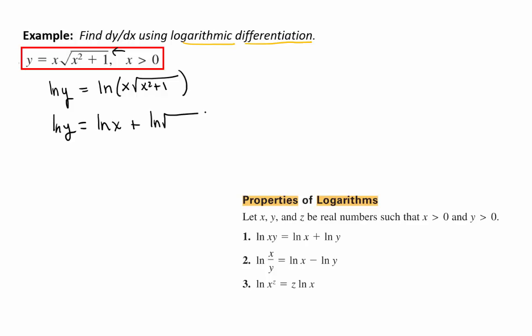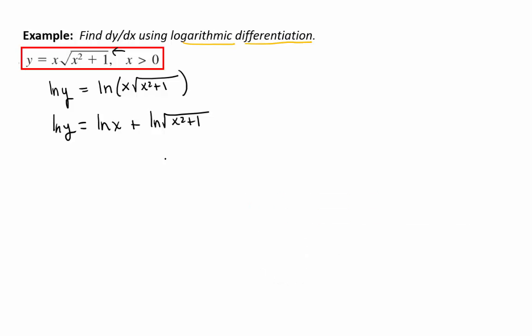Or an even better way of writing that would be with a power, right? x squared plus 1 to the 1 half power. Now I can change that power to a coefficient. So this is going to be 1 half the natural log of x squared plus 1.